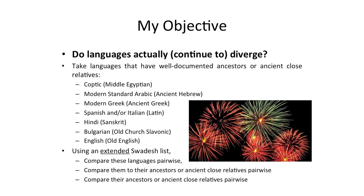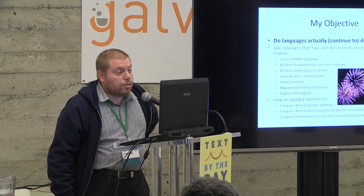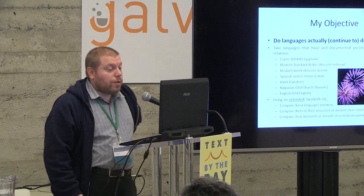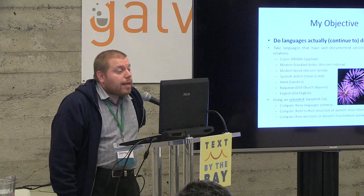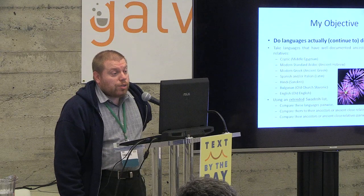The ultimate objective of the study is to find out: do languages actually diverge or continue to diverge? Most comparative linguists agree — like in this picture of fireworks — that we are dealing with clusters of related languages. There is no way to deny that, and at some point they diverged from one or more proto-languages, thus the reference to the legend of the Tower of Babel.